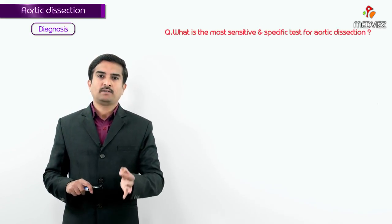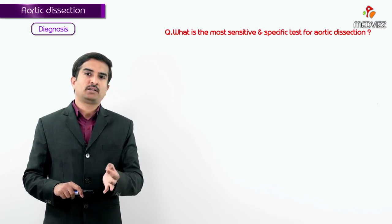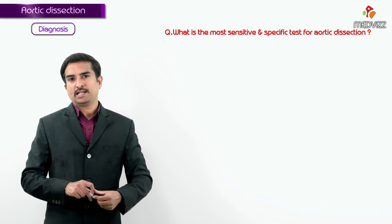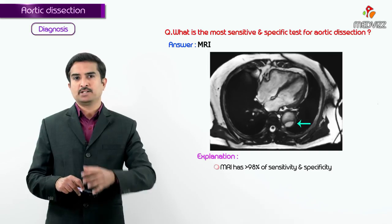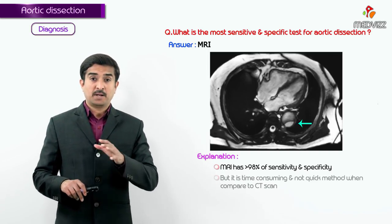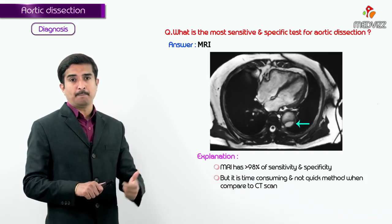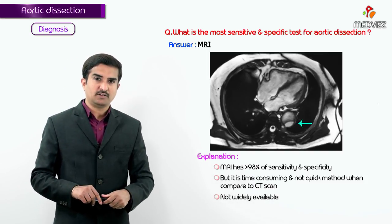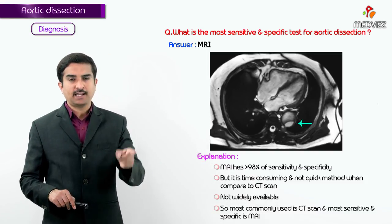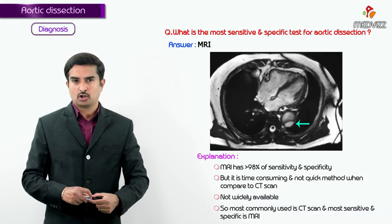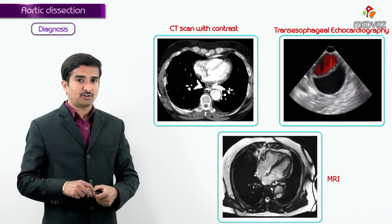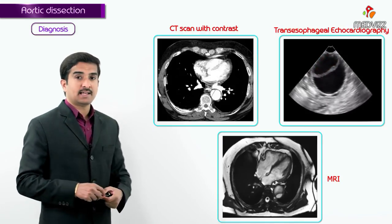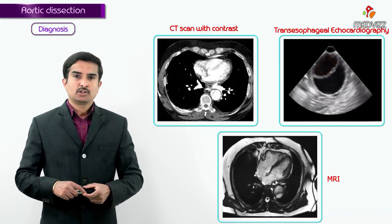In the exam, if asked what is the most sensitive and most specific test for aortic dissection, the answer is MRI, which has greater than 98 percent sensitivity and specificity. However, MRI is time-consuming and not widely available, which is why CT is the most commonly used initial test. The three important diagnostic modalities are CT with contrast, TEE, and MRI.